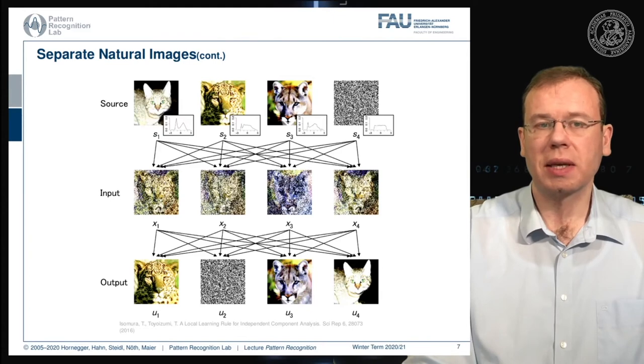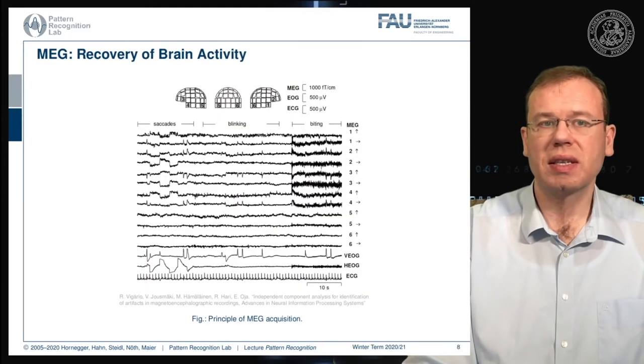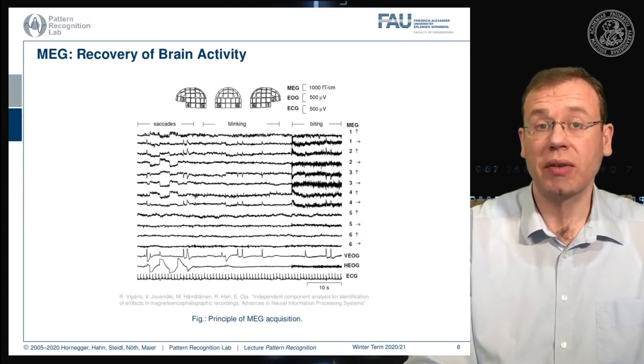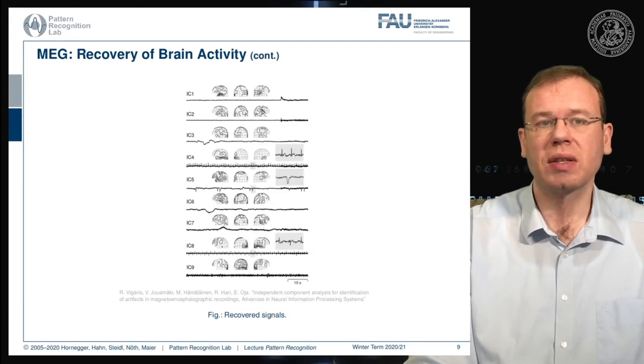Now this was an application in imaging. So we can also use this to analyze brain activity. And here we are actually looking into an MEG acquisition. And you see that the MEG field is actually acquiring a superposition of all the different things that are happening in the brain. So we have a mixed signal that we are observing. And if we now apply an independent component analysis, then we are able to reconstruct different activities in the brain. So we can use this method in order to localize different independent components and regions of activity in the brain.